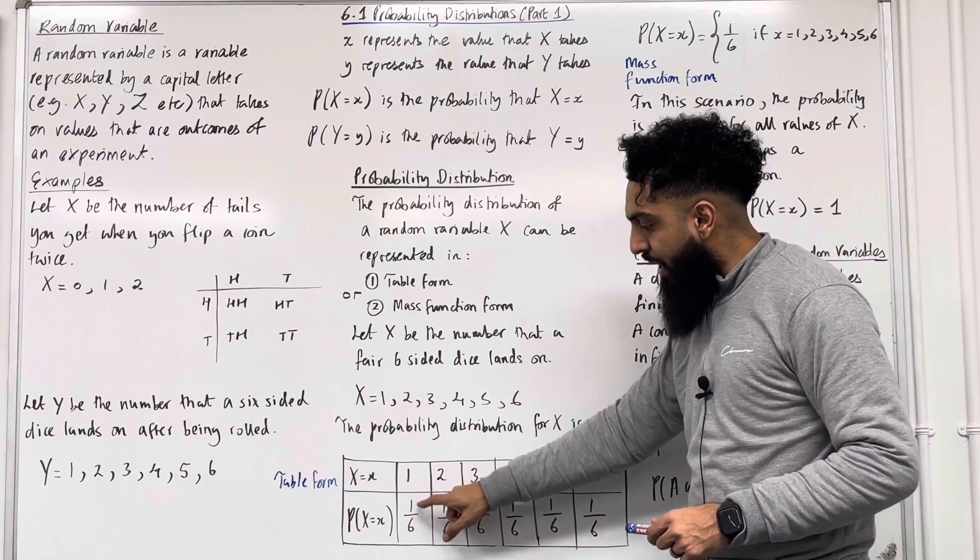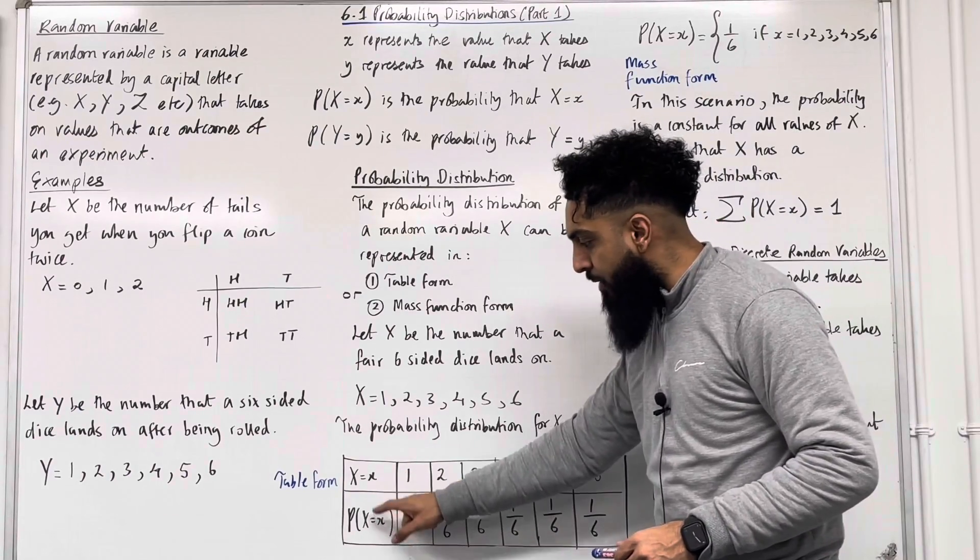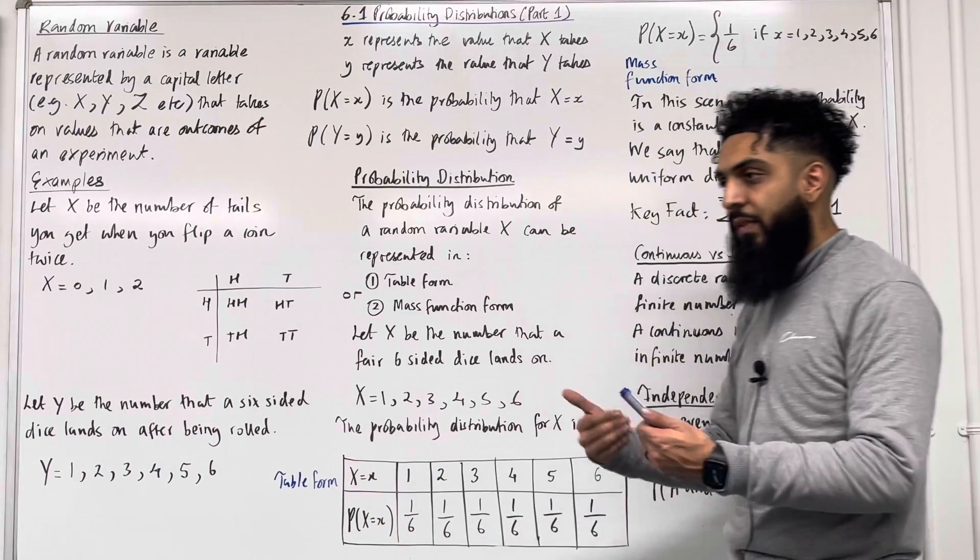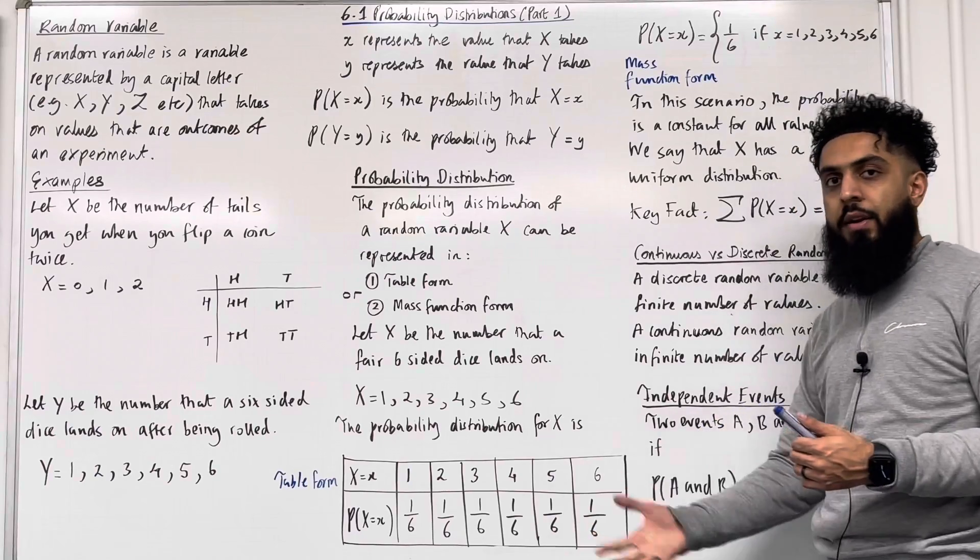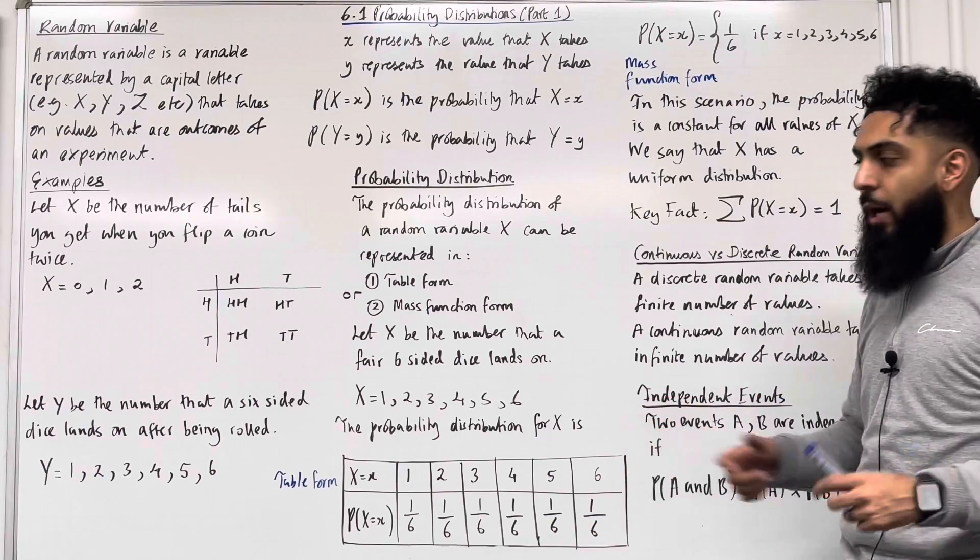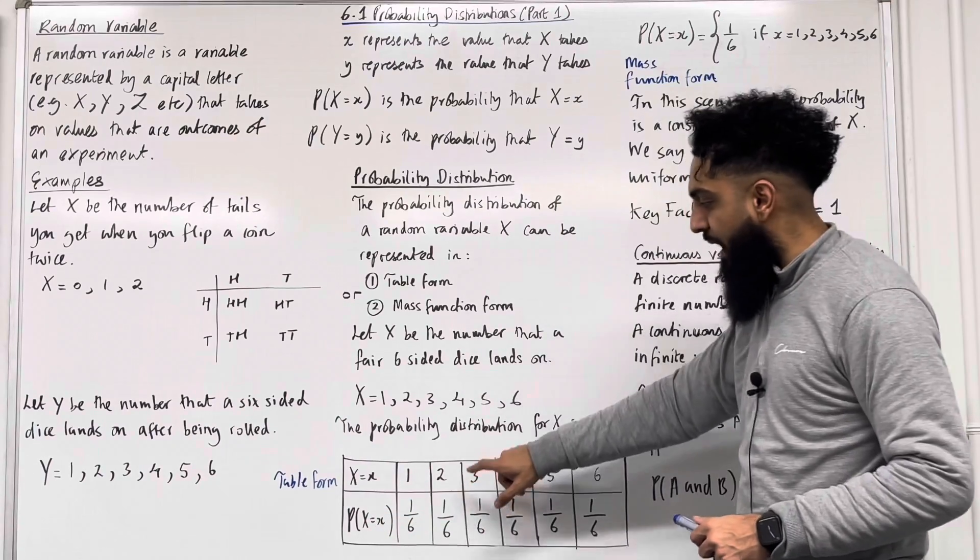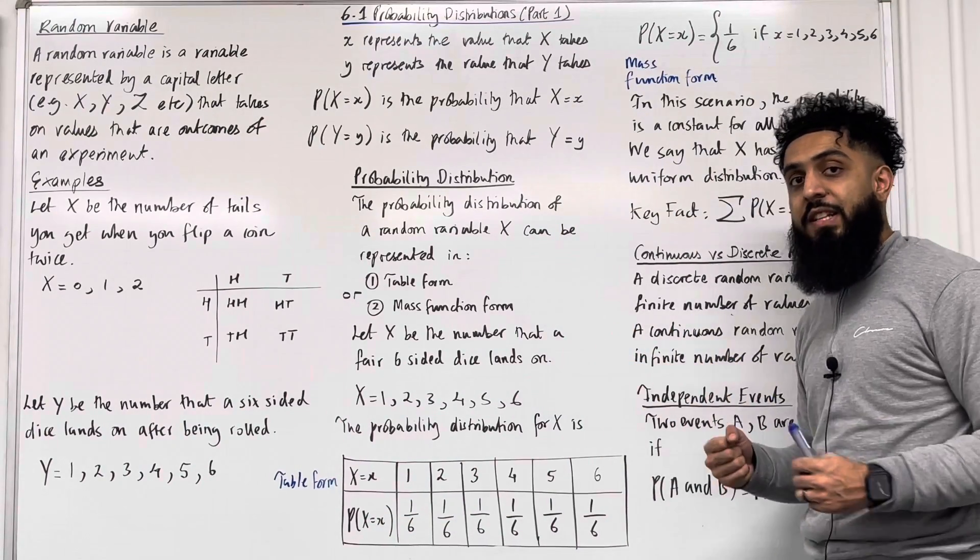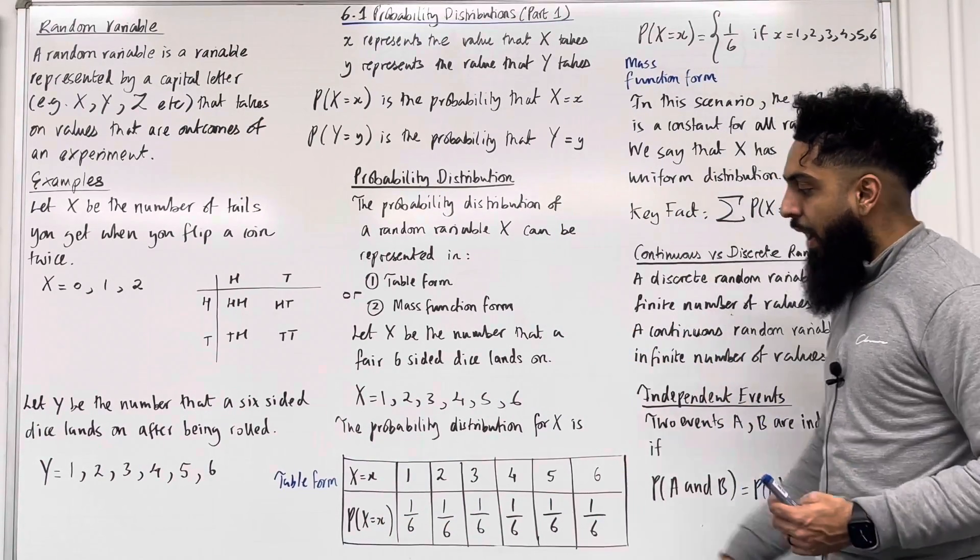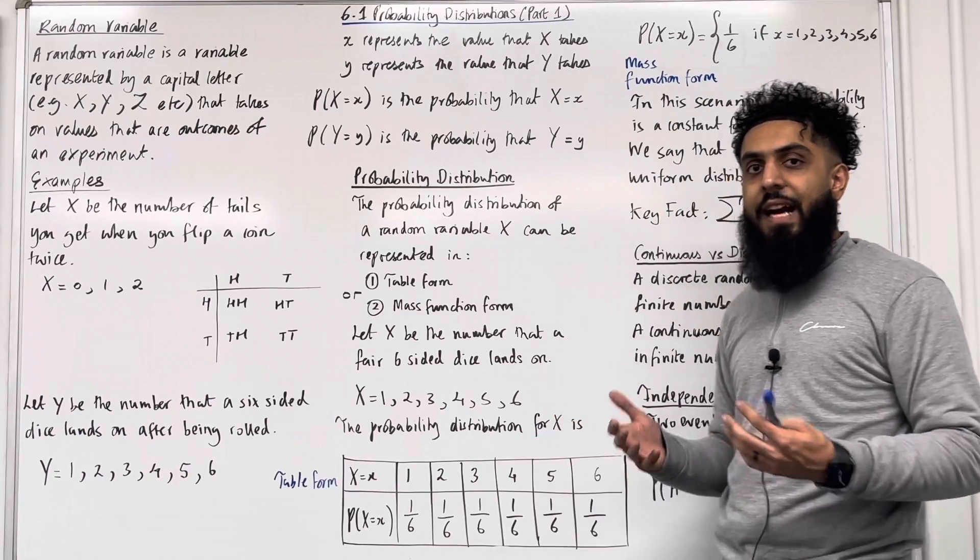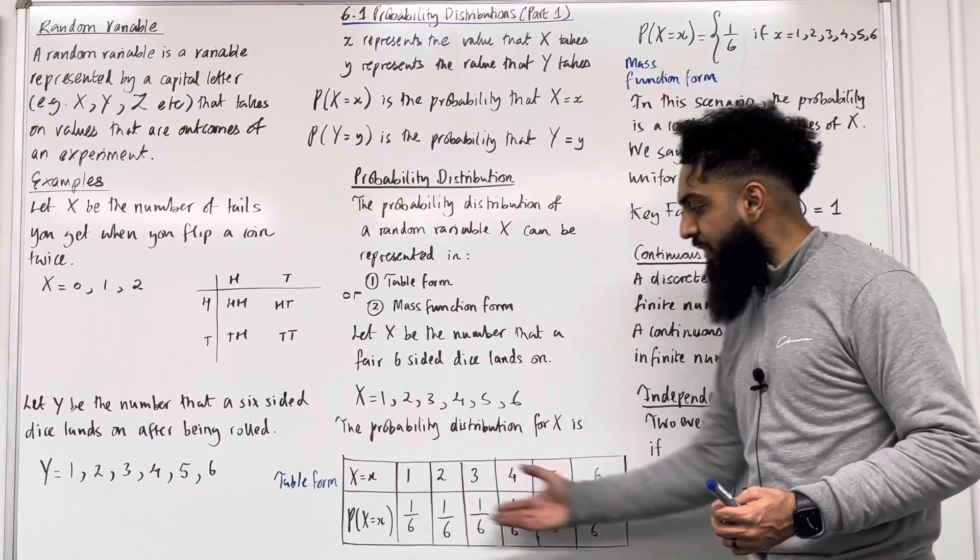So this probability 1 out of 6 is the probability that capital X takes on the value 1. In other words, the probability that you roll a 1, 1 out of a possible 6 outcomes. This probability is the probability that capital X takes on the value 2. In other words, the probability that you roll a 2. Again, 1 out of a possible 6 outcomes. The probability is a constant throughout.